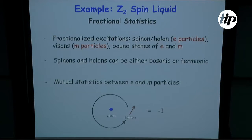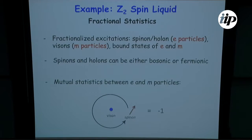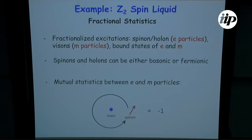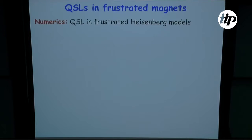If you have a bosonic spinon, you can bind it to a vison and get a fermionic spinon — same for the holons. So there are four different topological sectors, characterized by their fractional statistics. For instance, if you take a spinon in a closed loop around a vison, you get a phase of minus one. As Bela discussed, these statistics actually characterize the state.